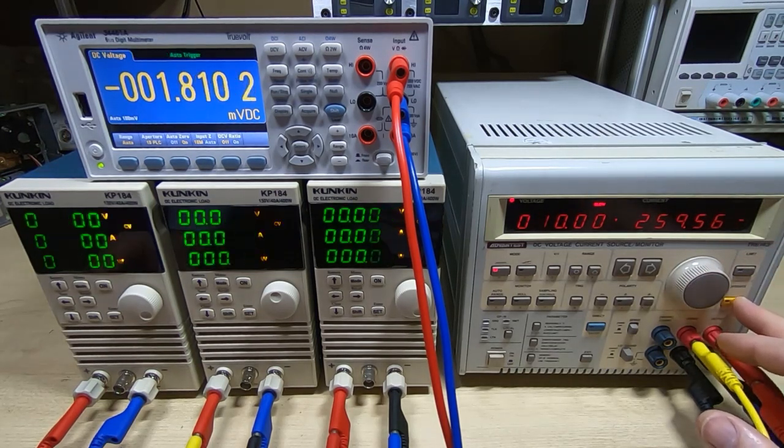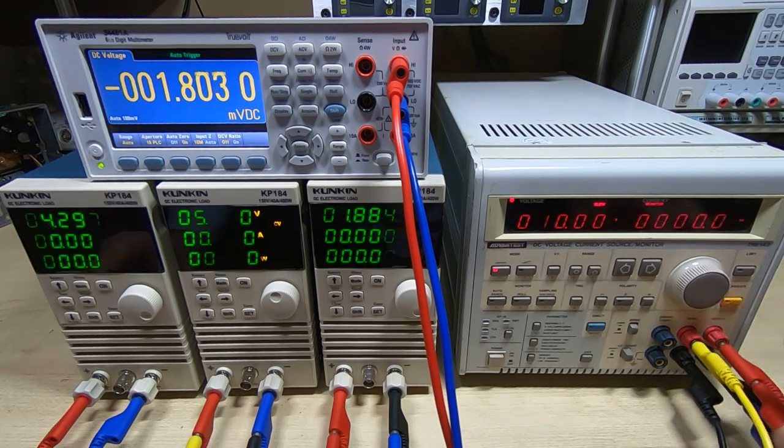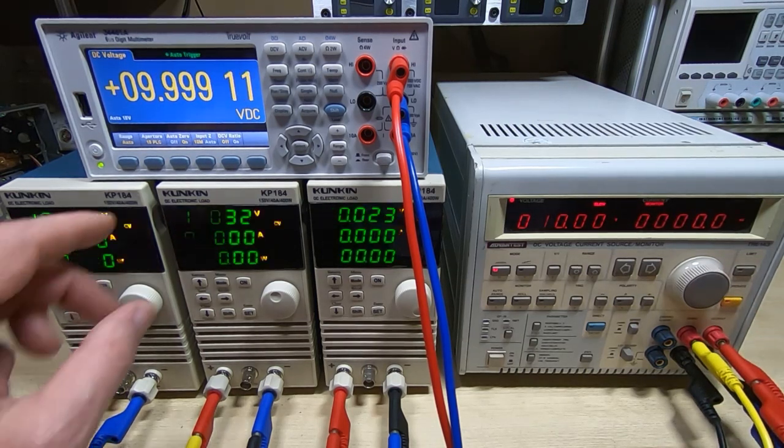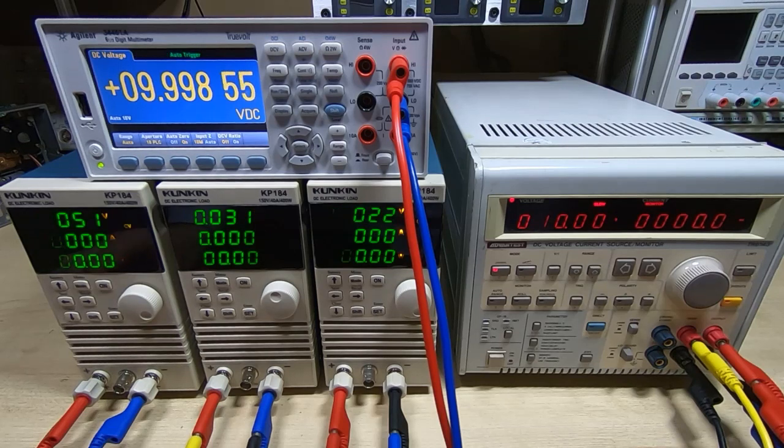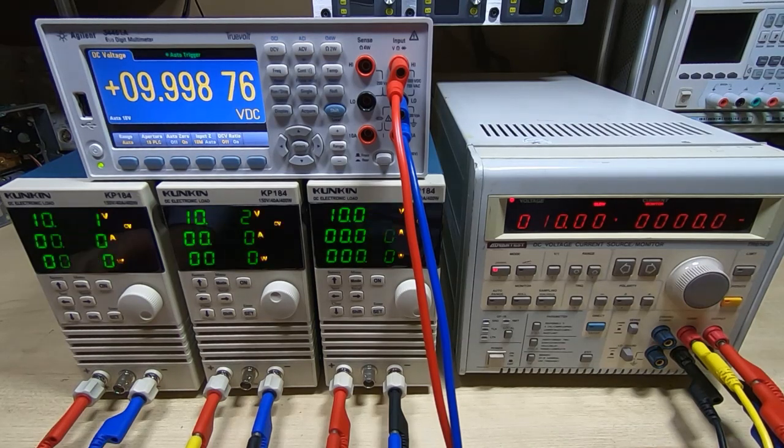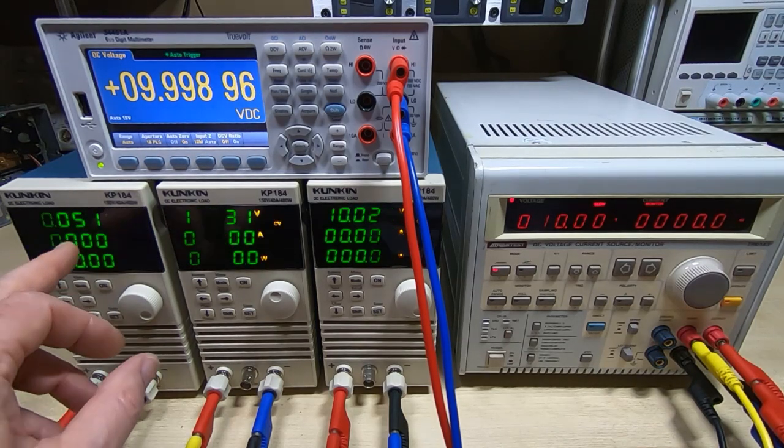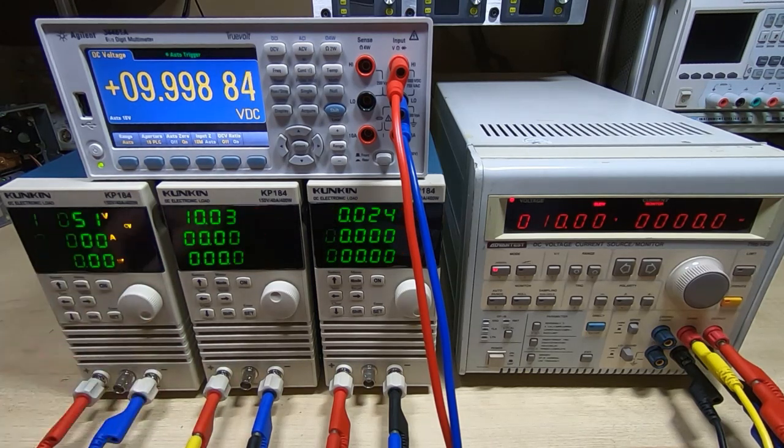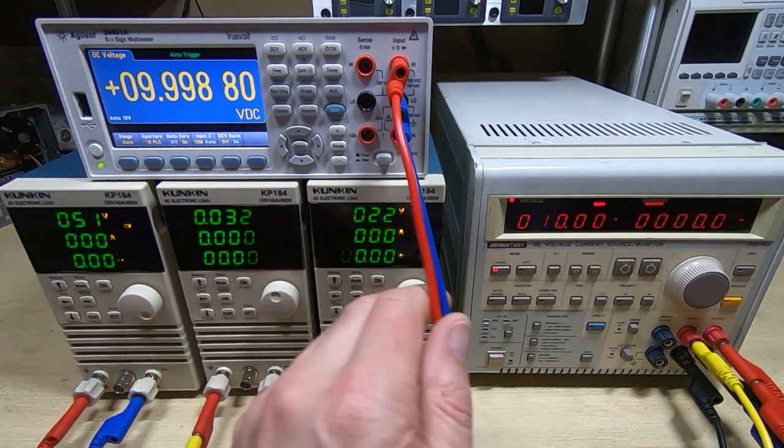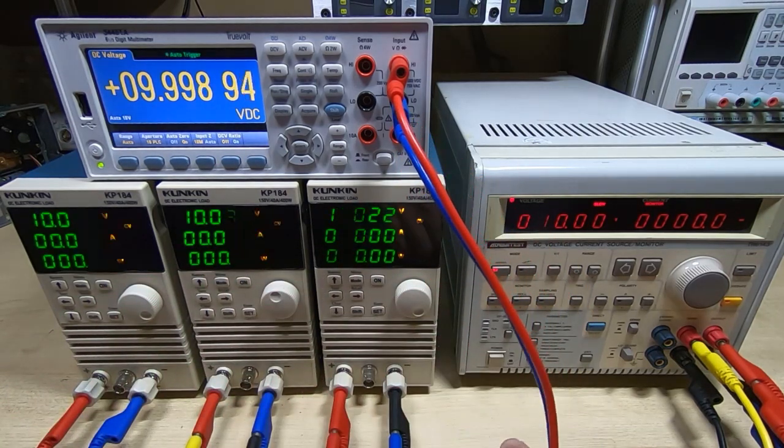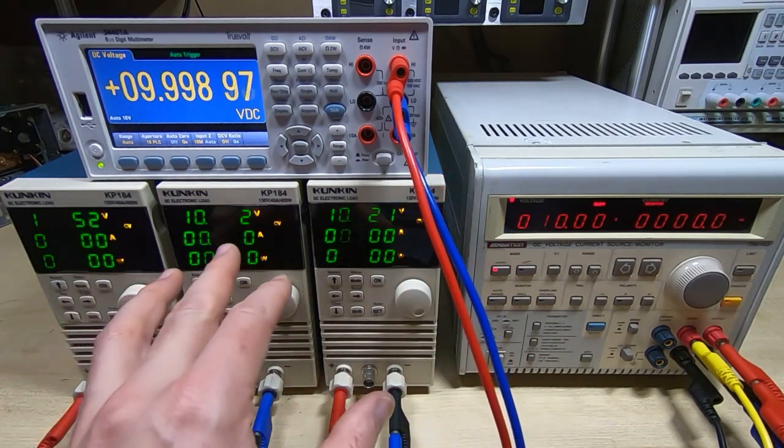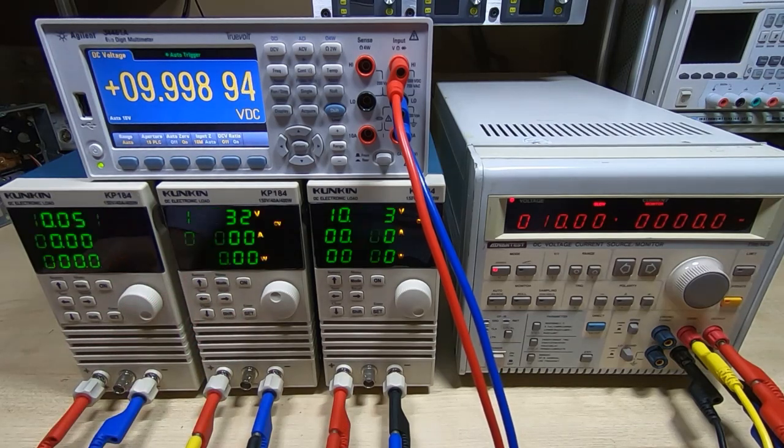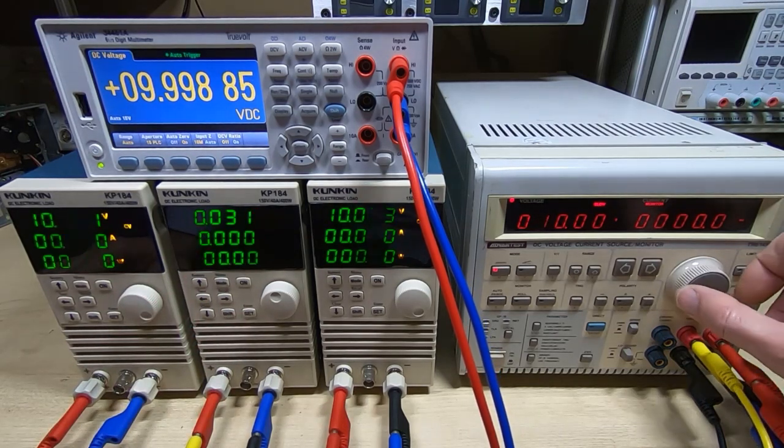I'll turn the output of the source on and we can now see that we're getting very close to 10 volts on the Agilent. But if we look at the KP184s we'll see they're not too bad but we're getting 10.051, 10.032, and 10.023. It's not terrible but it would be nice to have them a bit closer.